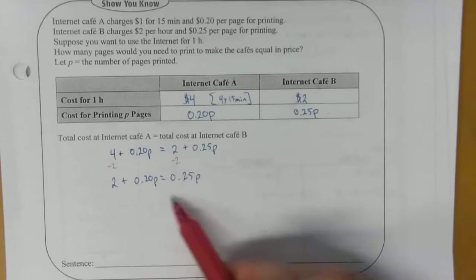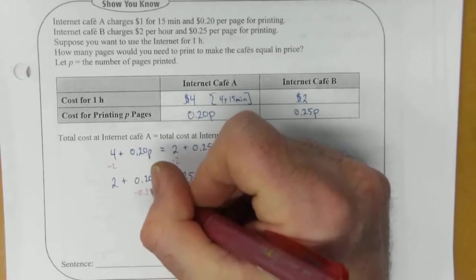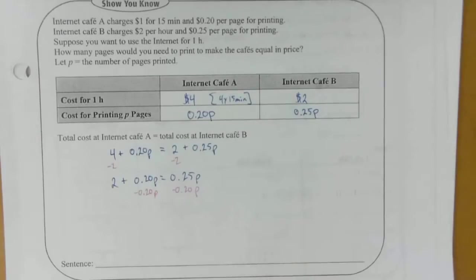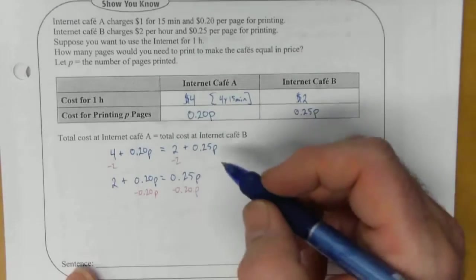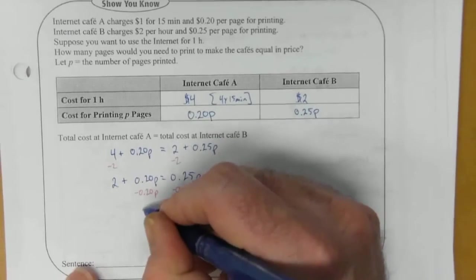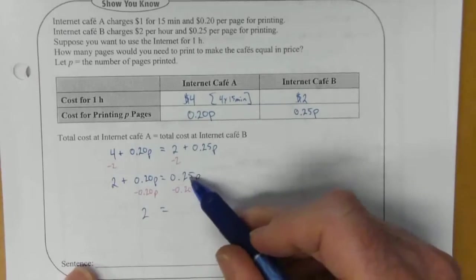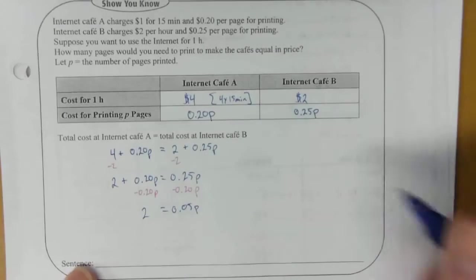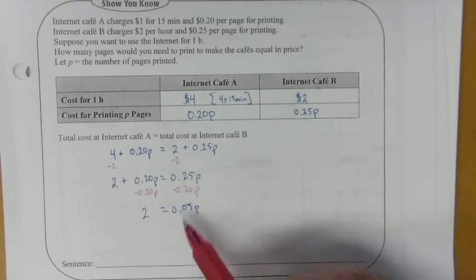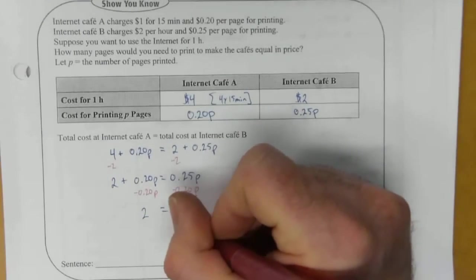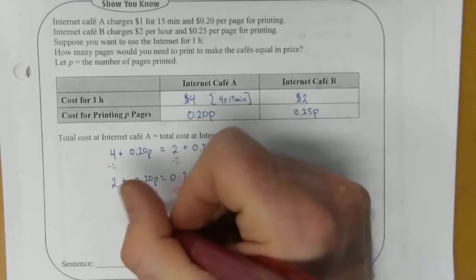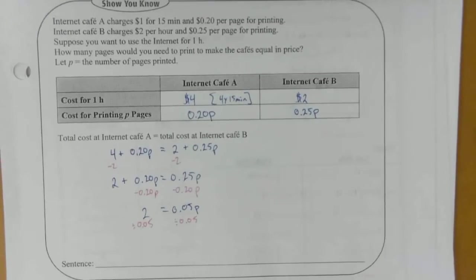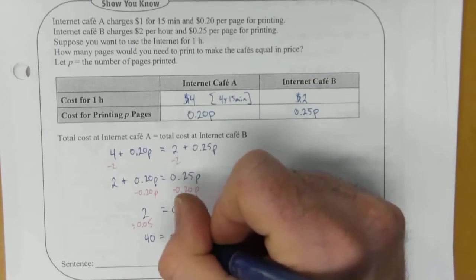Now I need to group my P's together so I'm going to subtract 0.20P from both sides. These subtract out leaving me with just two on the left. And on the right 0.25 minus 0.2 that's going to give me 0.05P. So now in order to get P by itself I need to divide both sides by 0.05.